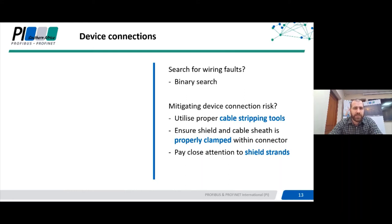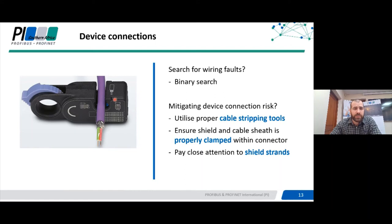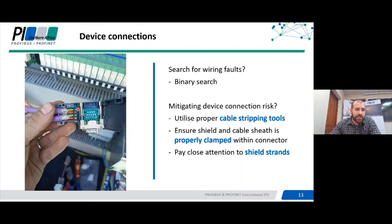To mitigate device connection risk, firstly utilize a proper cable stripping tool. This tool has two blades set at different depths: the first blade removes the outer sheathing, and the second blade scores and cuts off the shield but leaves a good one centimeter of shield to make good contact with the ground bar. Pay very close attention to the shield strands — sometimes not all strands are cut and one can accidentally go up towards the A and B lines, causing a short that can destroy an entire network on Profibus. As you create new plugs, make sure you test the cable and segments to ensure they are in a good state.